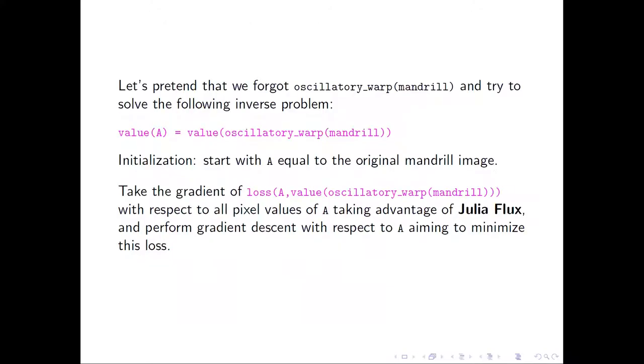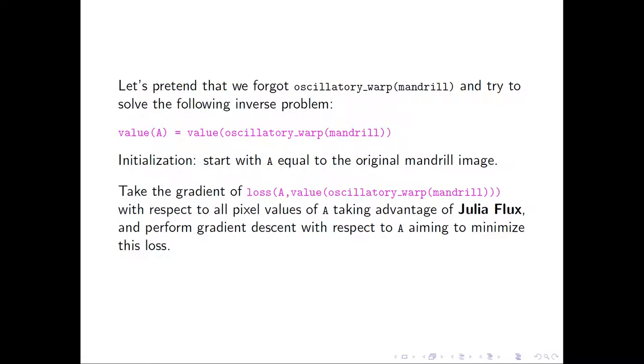And now let's forget how we obtained the results with grains, and let's try to solve the inverse problem. What should be the matrix to obtain grains? We initialize, starting with the original monkey. Take the gradient of the loss function with respect to the image, and perform gradient descent with respect to the image.